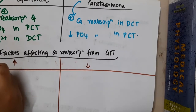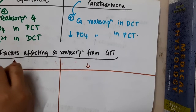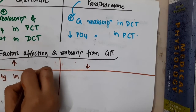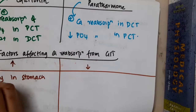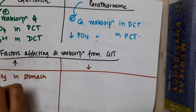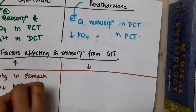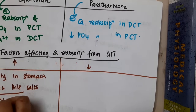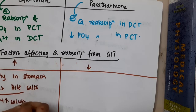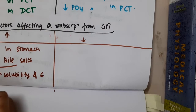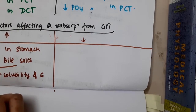First, acidity of the stomach — acidity in the stomach increases calcium reabsorption. Second, the presence of bile and bile salts, which increase the solubility of calcium salts and thus increase calcium reabsorption.